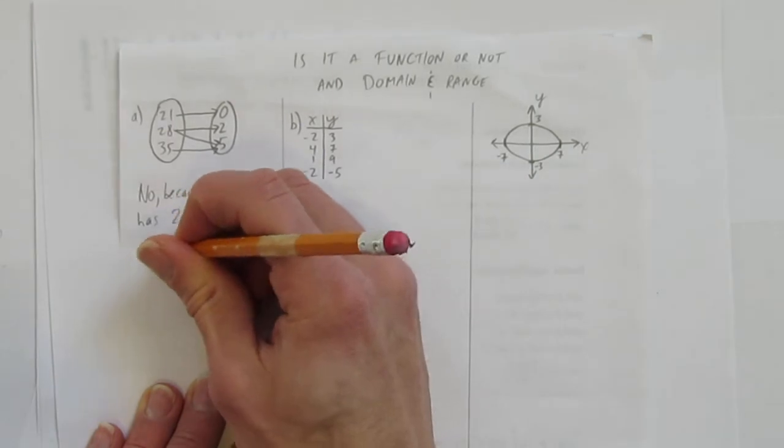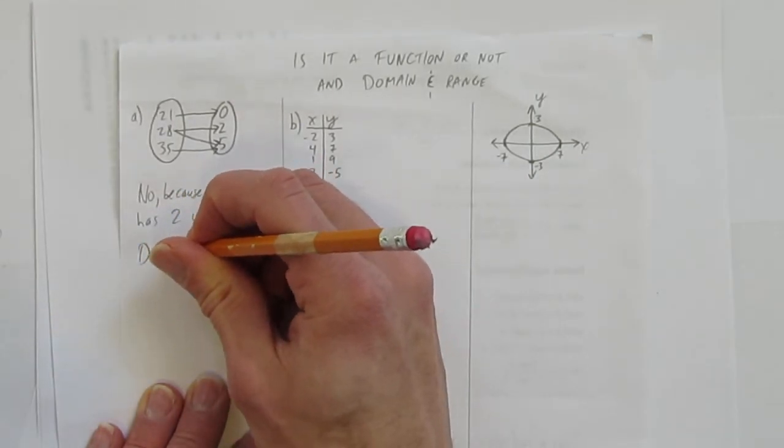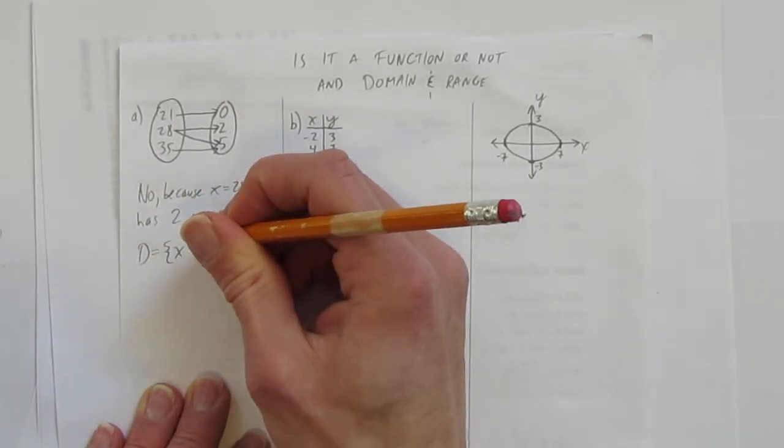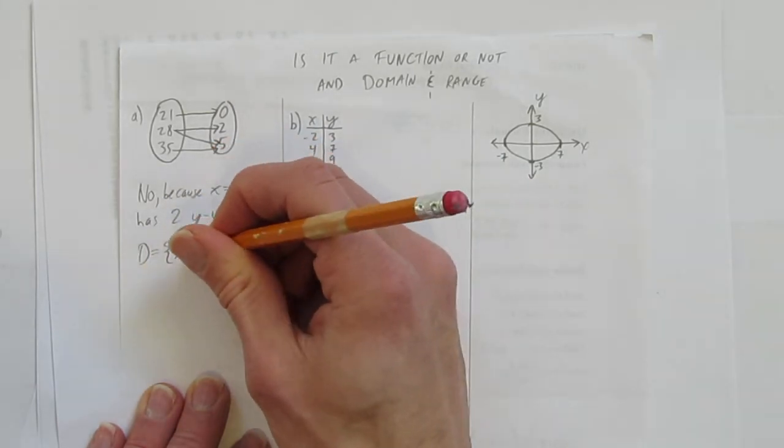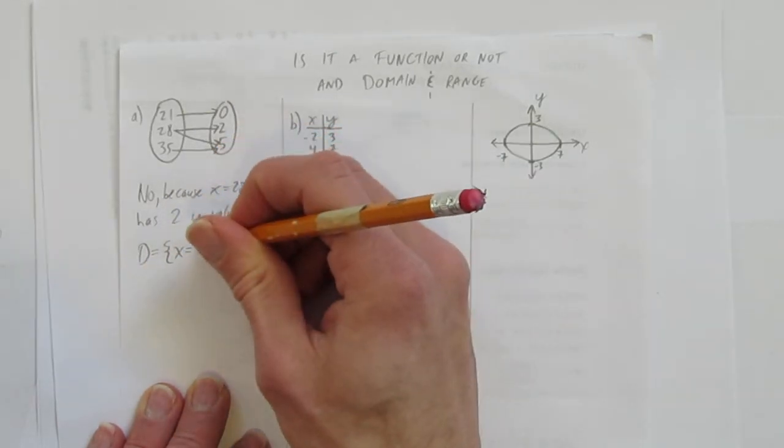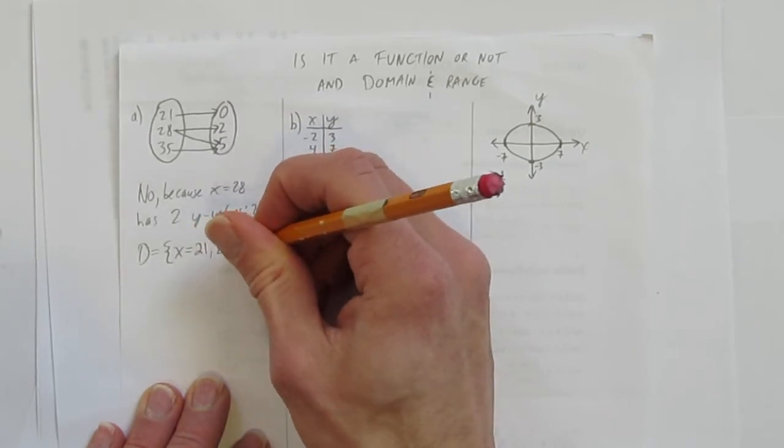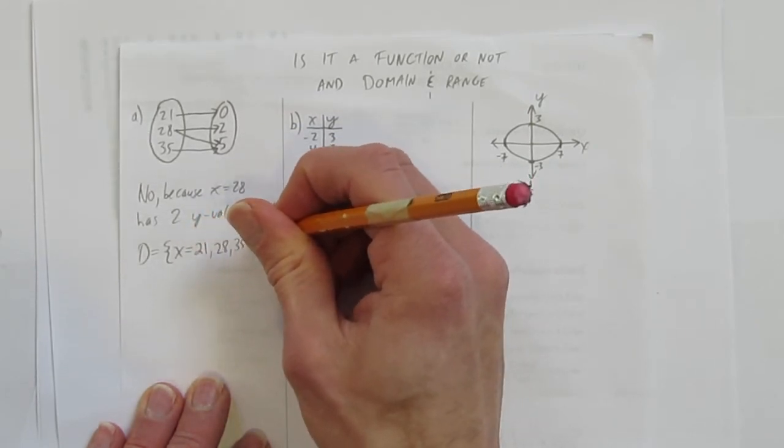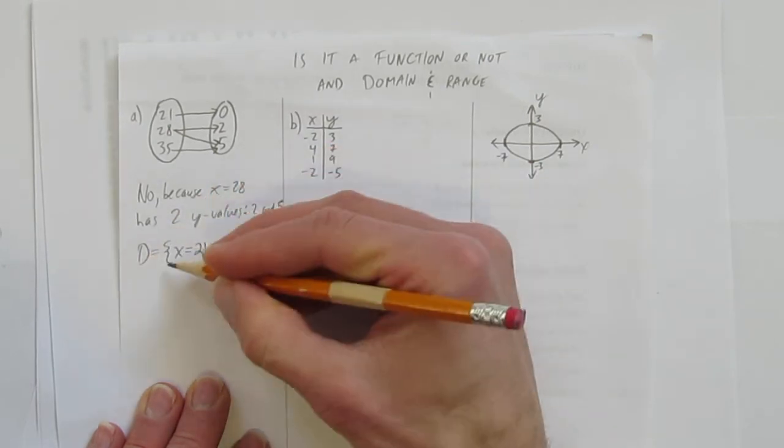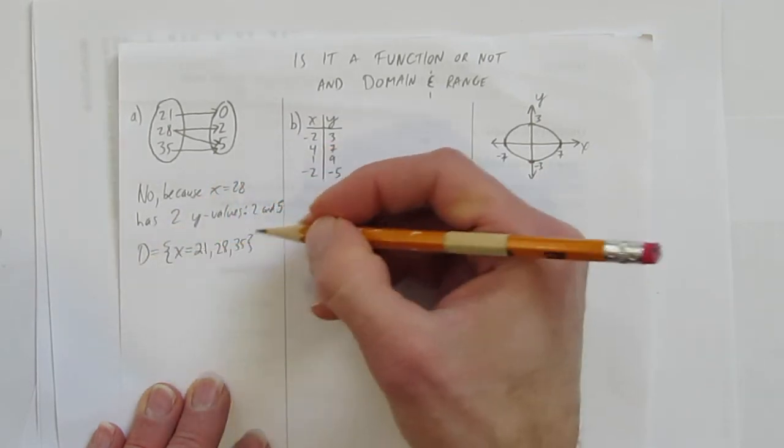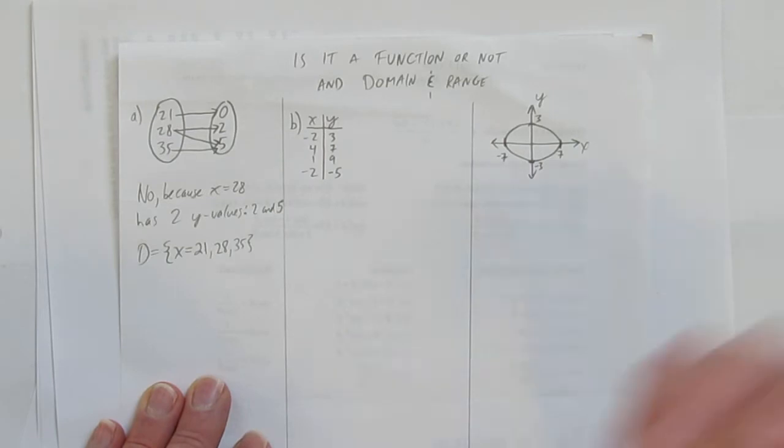But, we can still talk about its domain and range, and when you just have numbers like this, you just list it off. The domain is the set of x equals, and you should put the numbers in order. The domain is the set of x equals 21, 28, or 35. Done.